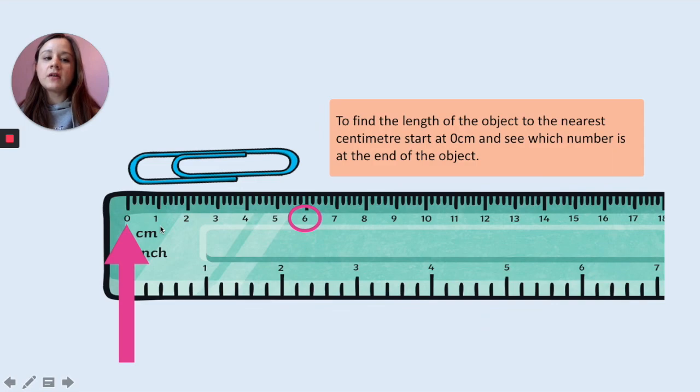To find the length of the object, you place it on zero and then you look at the end of the object. Which number does it land on? This one lands on six, so that means that this paper clip is six centimeters.